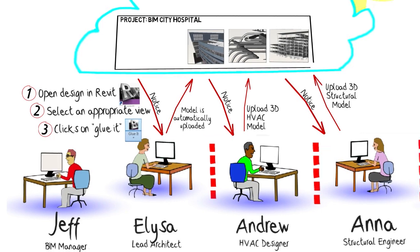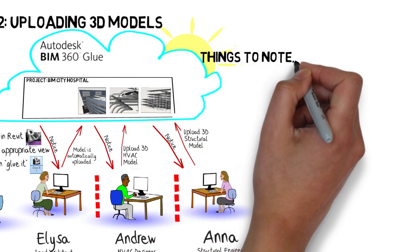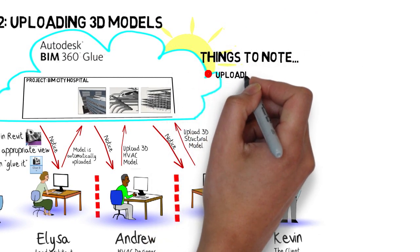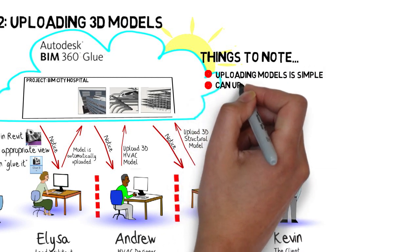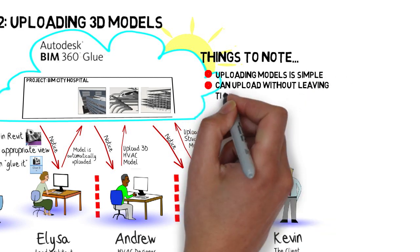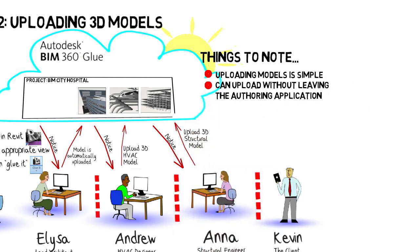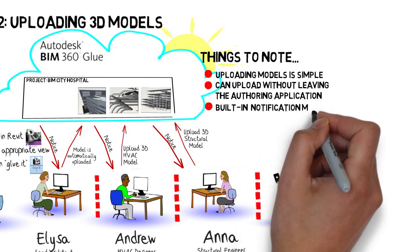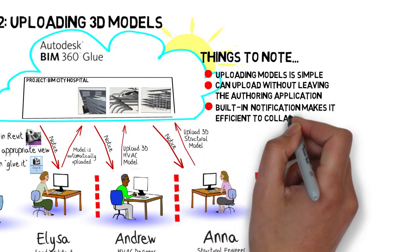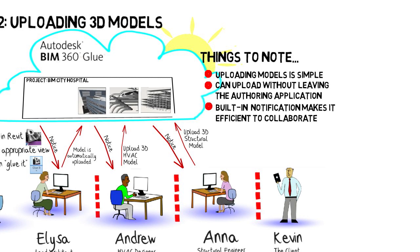Here are a couple of important things to note. First, note that uploading models is a simple process that can often be done without leaving the authoring application. There's none of the complexity of traditional file exchange or FTP operations, and BIM 360 Glue supports over 50 different formats that can be directly added to the project using upload or drag and drop. Finally, the built-in notification features make it efficient to collaborate across the extended project team.